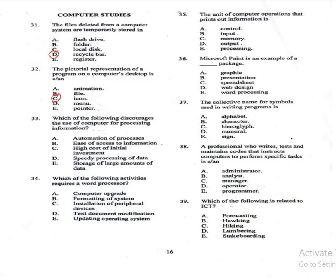Question 33: Which of the following discourages the use of computer for processing information? A: automation of processes, B: ease of access to information, C: high cost of initial investment, D: speedy processing of data, E: storage of large amounts of data. The correct answer is C, high cost of initial investment.